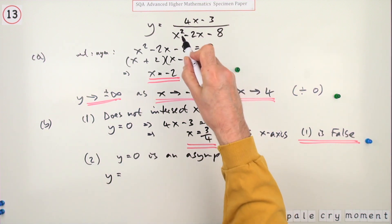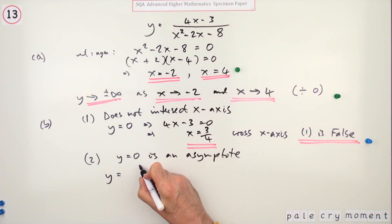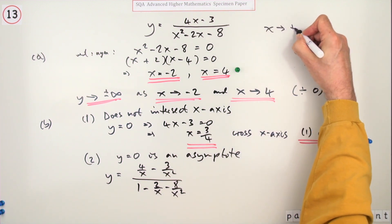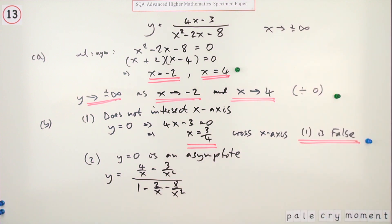So I've got 4 over x minus 3 over x squared, over 1 minus 2 over x minus 8 over x squared. Because you're trying to show the behavior as x tends to plus or minus infinity. Now you can't put infinity into a calculation, but as x tends to infinity...